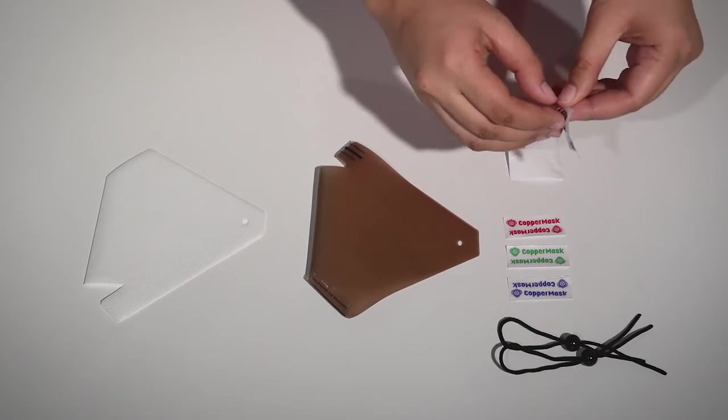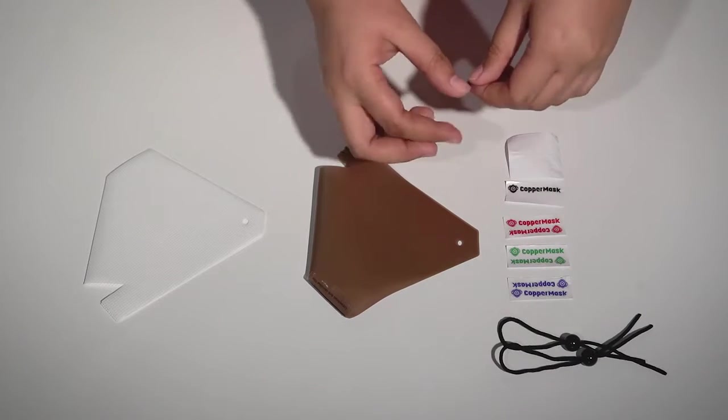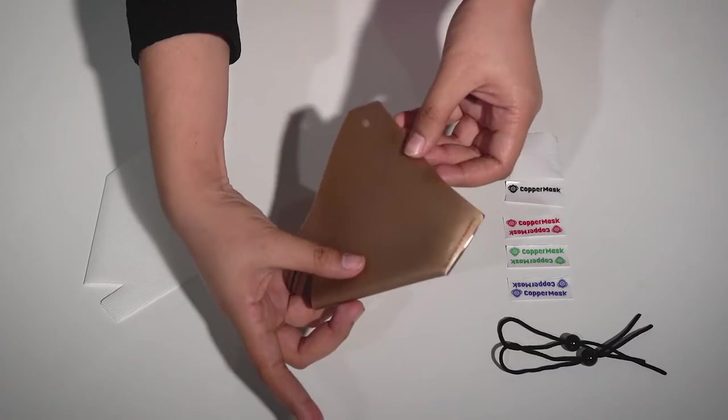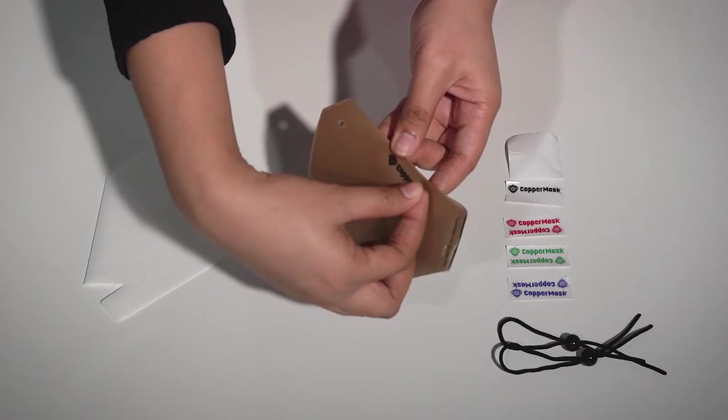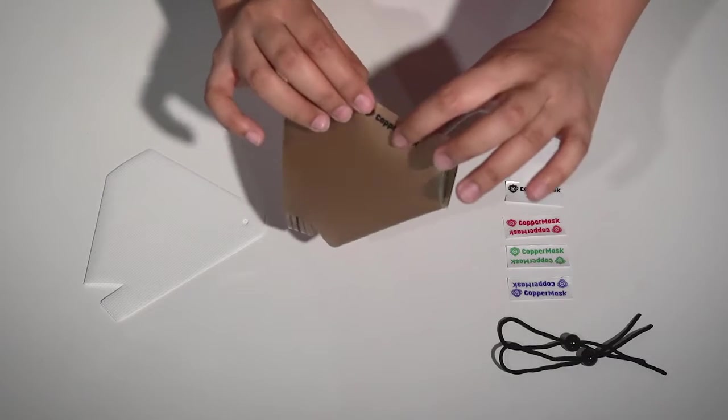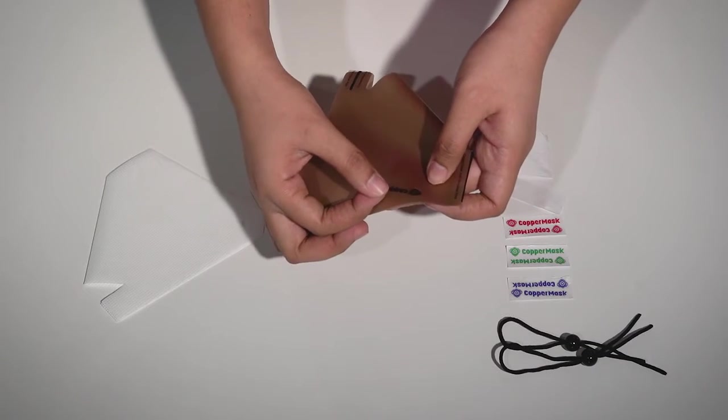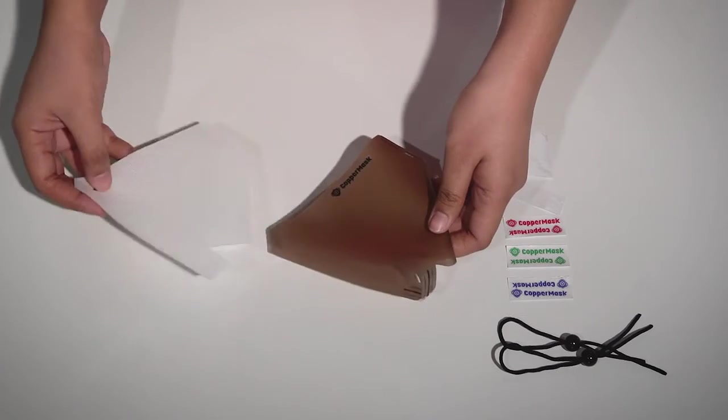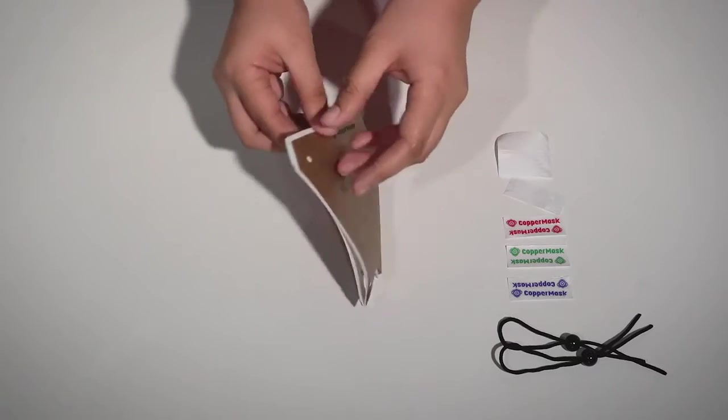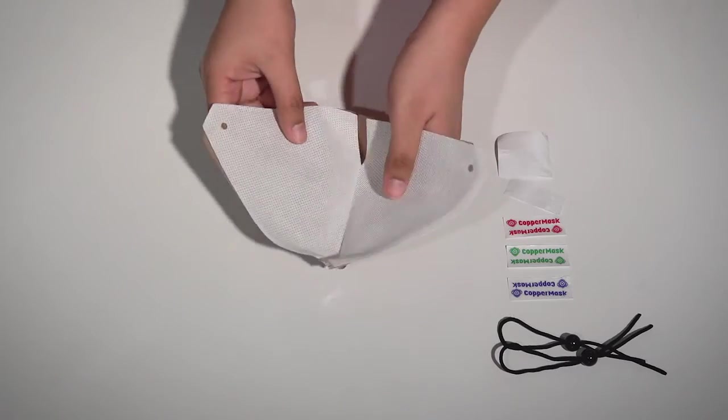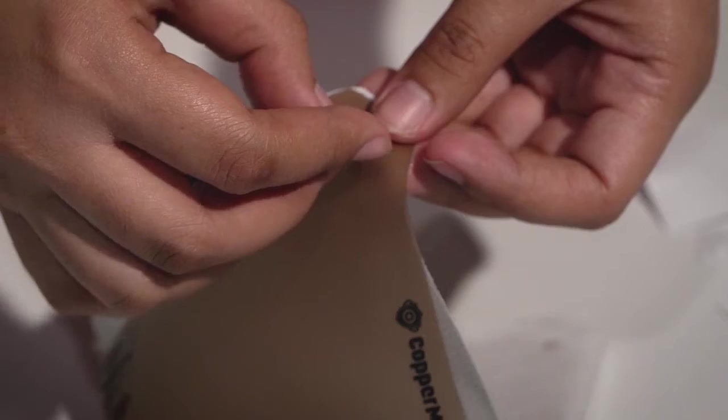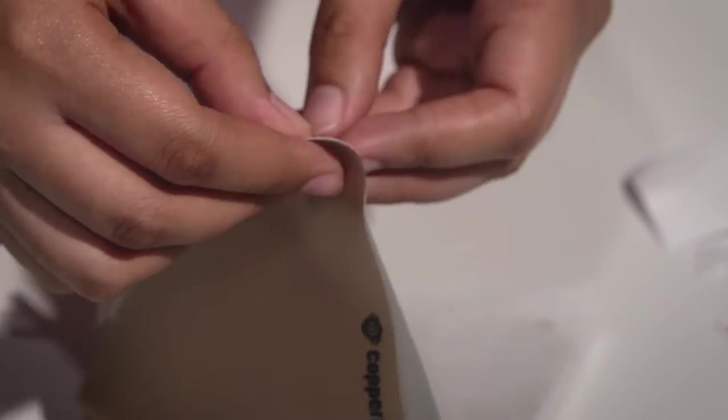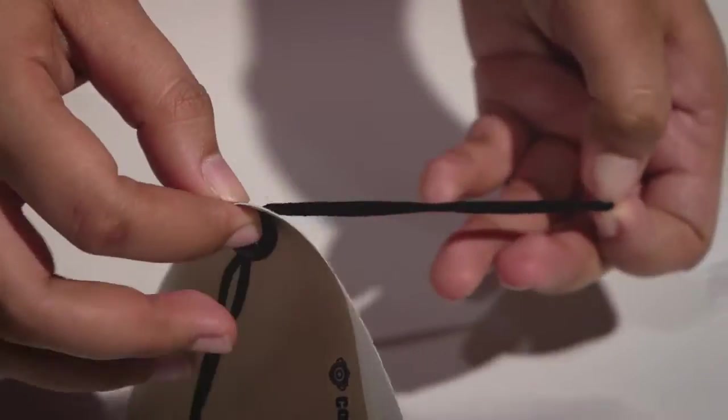Next, put the Copper Mask logo stickers on both the upper left and upper right side of the mask. After that, you can now place a piece of non-woven fabric filter inside the Copper Mask antimicrobial film. Finally, put the elastic string on both sides and adjust it depending on your preference.